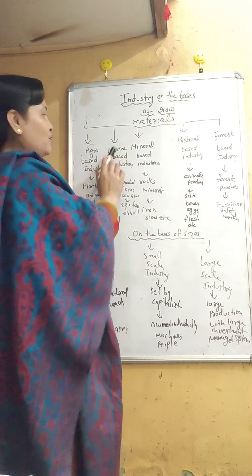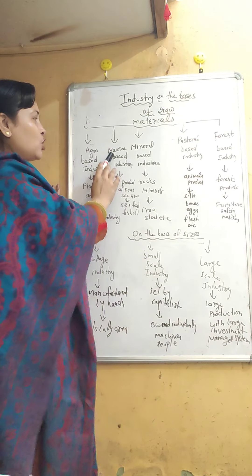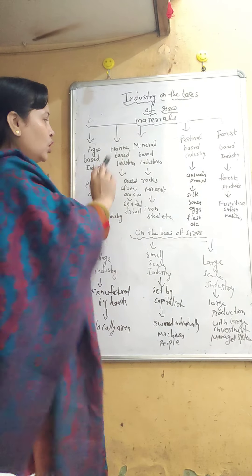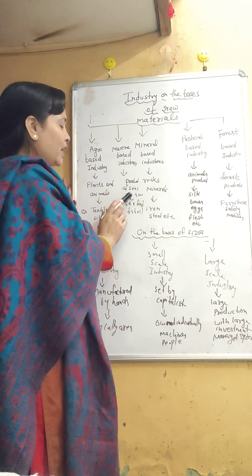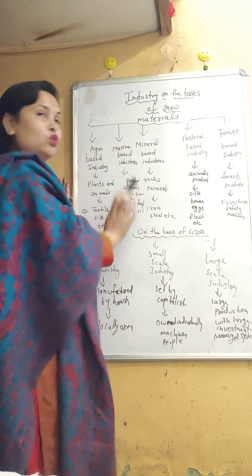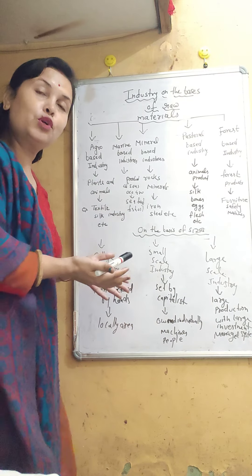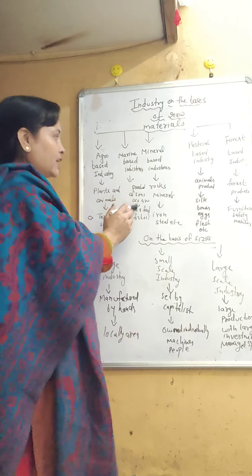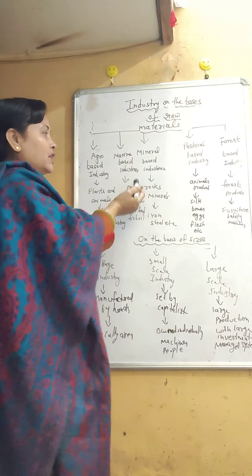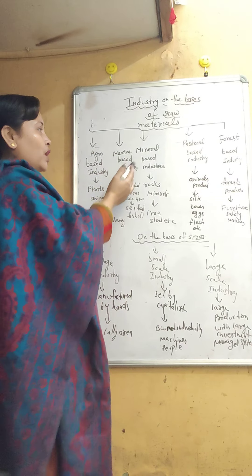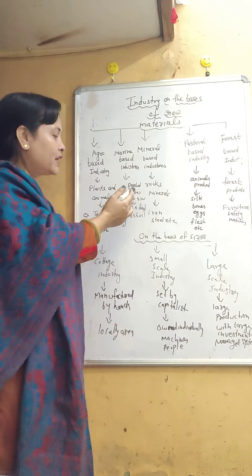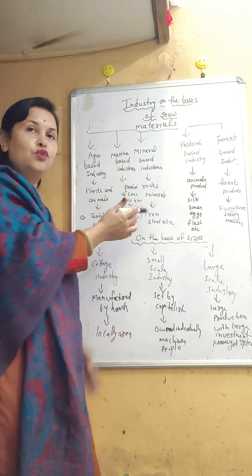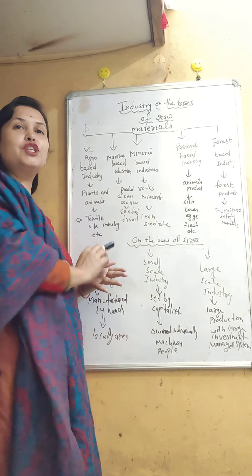The next type is marine-based industries. The sea and ocean are used as a raw material, so that type of industry is known as marine-based industry, where we are processing seafood and fish oil.